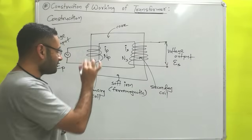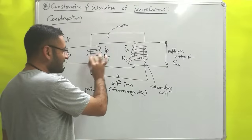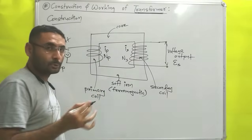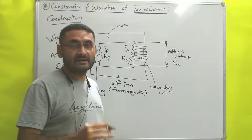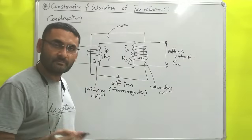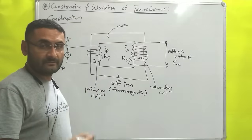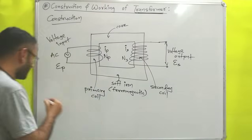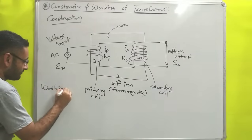From the figure, you can see that the number of turns in the primary as well as secondary coils are both different. So all the game is based on the number of turns. We will understand this with the help of a working principle.